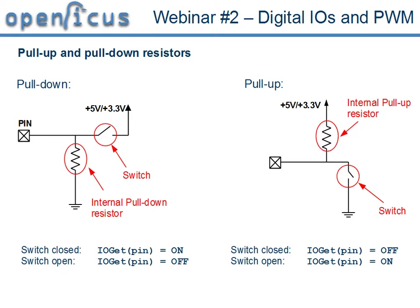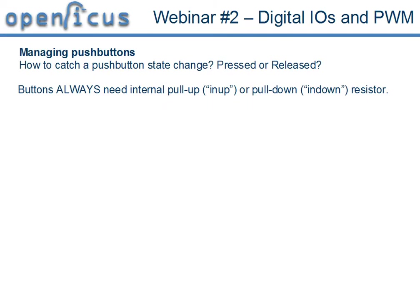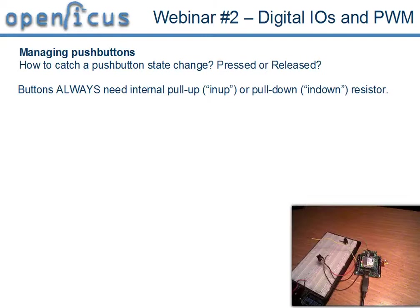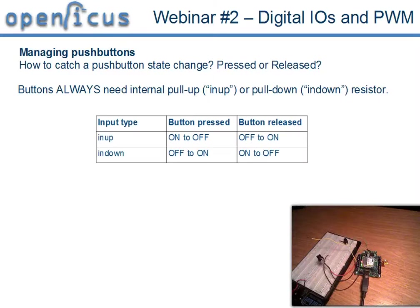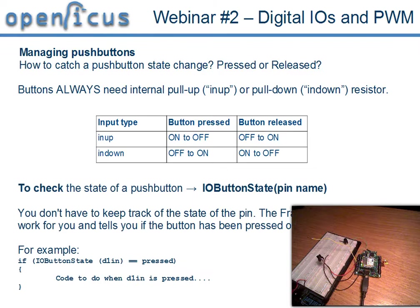This can be very useful in the case of push buttons. Push buttons must never be floating, so we always have to use the internal pull-up or pull-down resistor, and we are interested in knowing if a push button has been pressed or released. As shown in the table, we care about the transition of state — for example, when a button is pressed with IN_UP, the transition is ON to OFF. The framework has a specific command to manage the button: ButtonState takes the pin name or pin number and returns whether the button has been pressed or released.